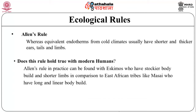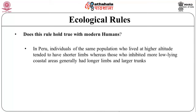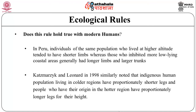Equivalent endotherms from colder climates usually have shorter and thicker ears, tails, and limbs. Allen's Rule in practice can be found with Eskimos, who have stockier body builds and shorter limbs in comparison to East African tribes like the Maasai, who have long and linear body builds. In Peru, individuals of the same population who lived at higher altitudes tended to have shorter limbs, whereas those inhabiting lower coastal areas generally had longer limbs and larger trunks. Similarly, indigenous human populations in colder regions have proportionally shorter legs, while people from hotter regions have proportionally longer legs for their height.